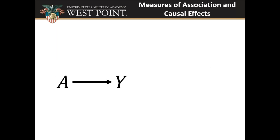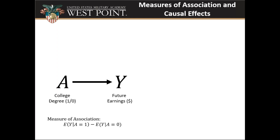Frequently, one of the things we want to do in statistics is measure the effect of something — a treatment — on some outcome Y. For example, I might want to know the effect of a college degree on future earnings as an adult. I could calculate the mean earnings of folks that went to college and subtract the mean earnings of those that didn't — that's a measure of association. However, in an observational study, that measure is subject to confounding from variables that are common causes of both getting a college degree and future earnings, such as parents' socioeconomic status.